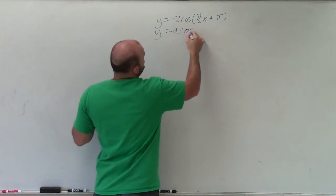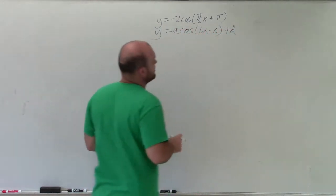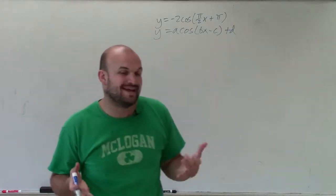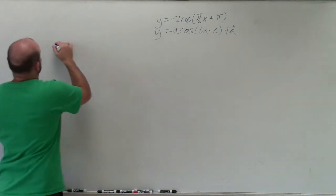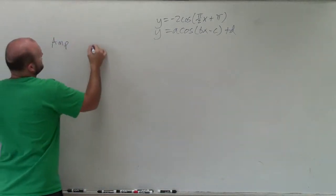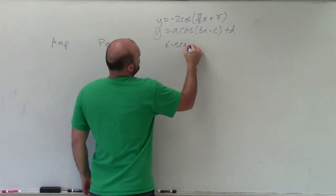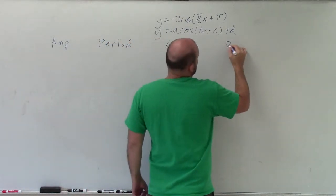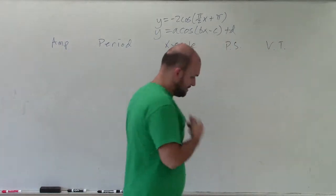So first thing we want to make sure is we know where the transformations are coming from. So we want to know this general equation of what the transformations are for a, b, c, and d. Whenever we're doing a sine and cosine, we always want to make sure we can determine what the amplitude is, what is the period, what is the x scale, what is the phase shift, and what is the vertical transformation.